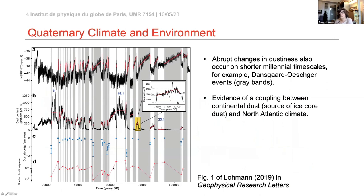On top of these longer timescale changes, the Quaternary is also characterized by more abrupt timescales. Looking at the last 100,000 years, we have the oxygen isotope of NGRIP — the Greenland ice core record — and just below it the dust content. We can see abrupt increases and decreases in dust content associated with gray bands that are Dansgaard-Oeschger events. There's clear evidence of coupling between continental dust and North Atlantic climate.